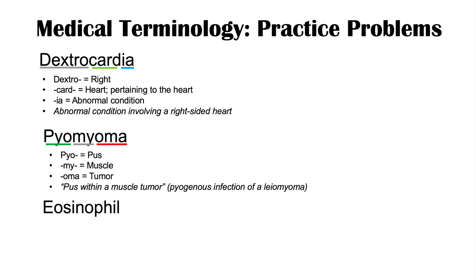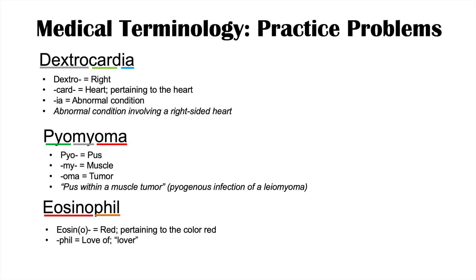The next word is eosinophil. Eosino means red or pertaining to the color red, and the suffix phil — you can think of it as phile or philia — means love of. So when you put this together, it means lover of red or lover of the color red. It's actually a type of immune cell that stains red with an eosin stain. Other cells are named similarly; it really means lover of a red stain.